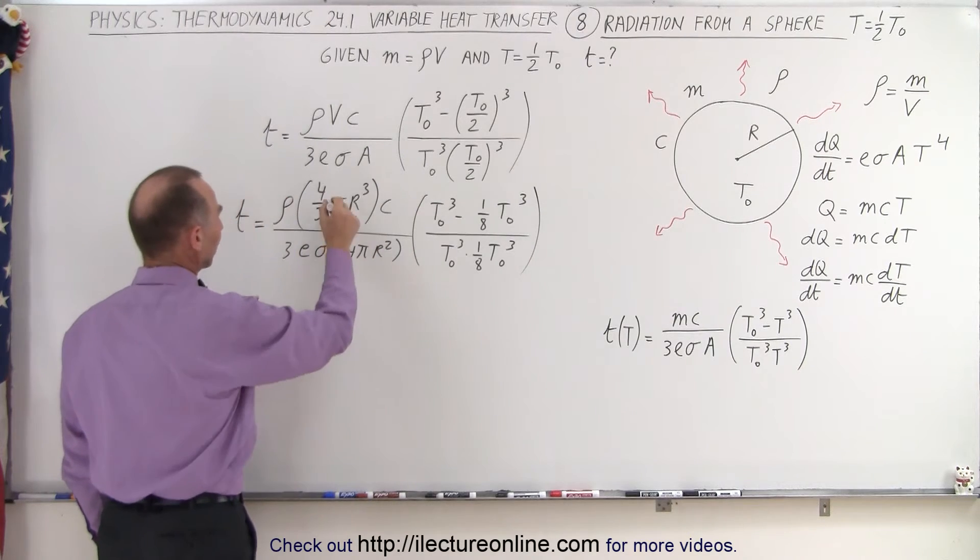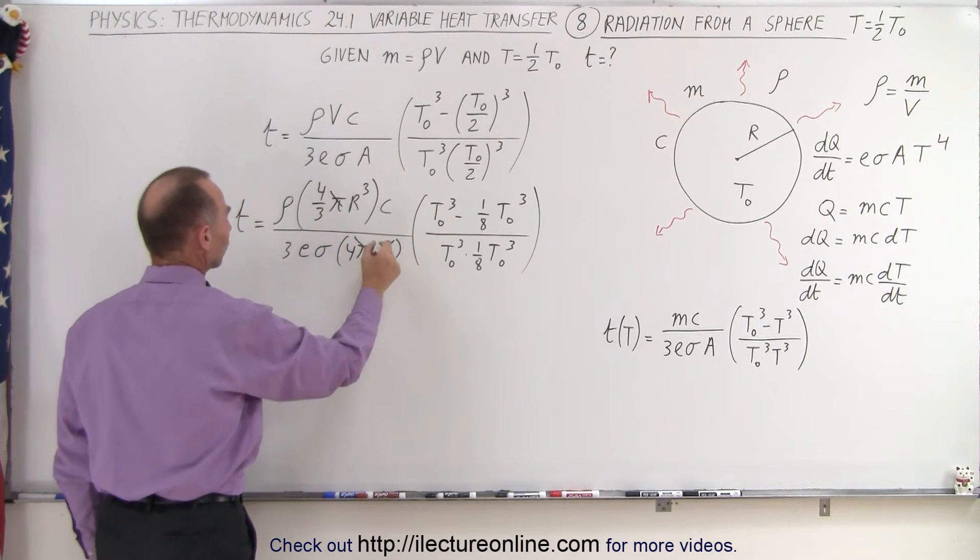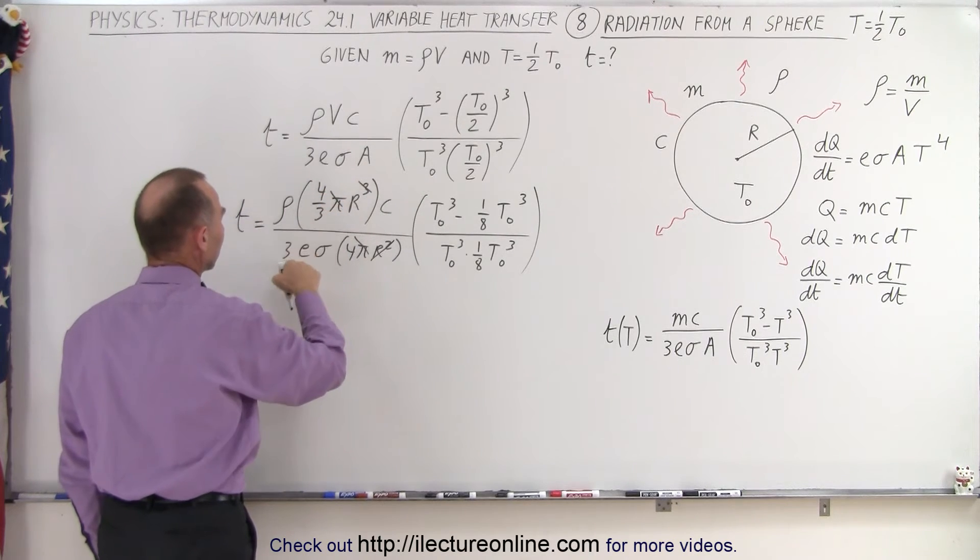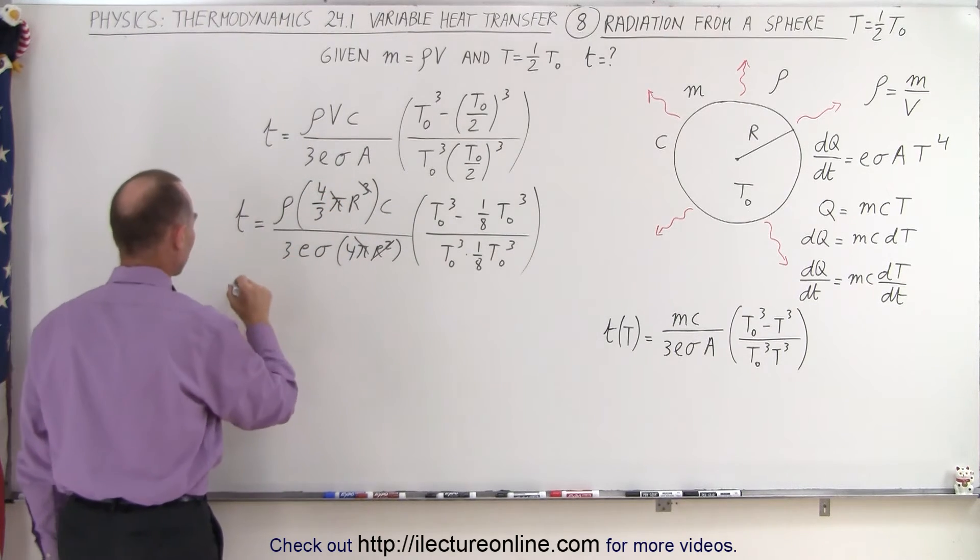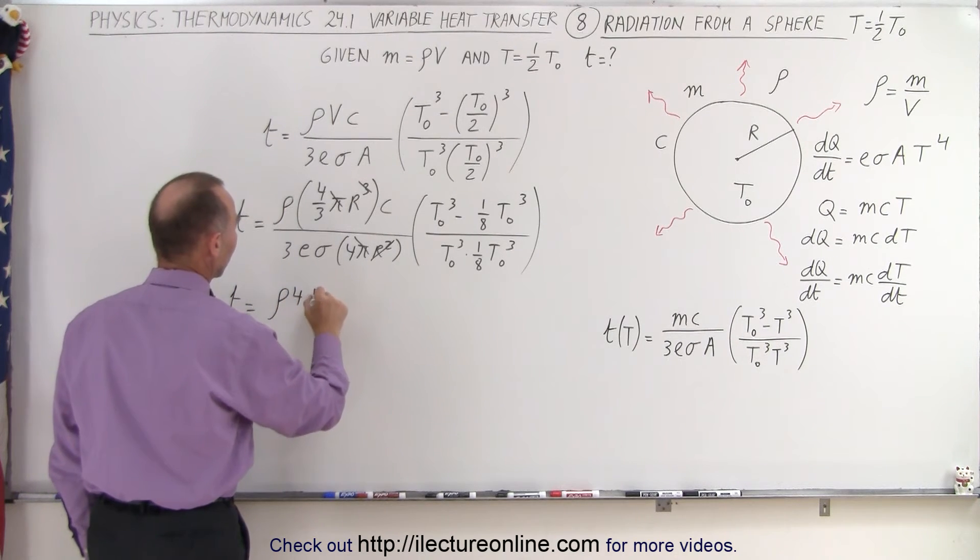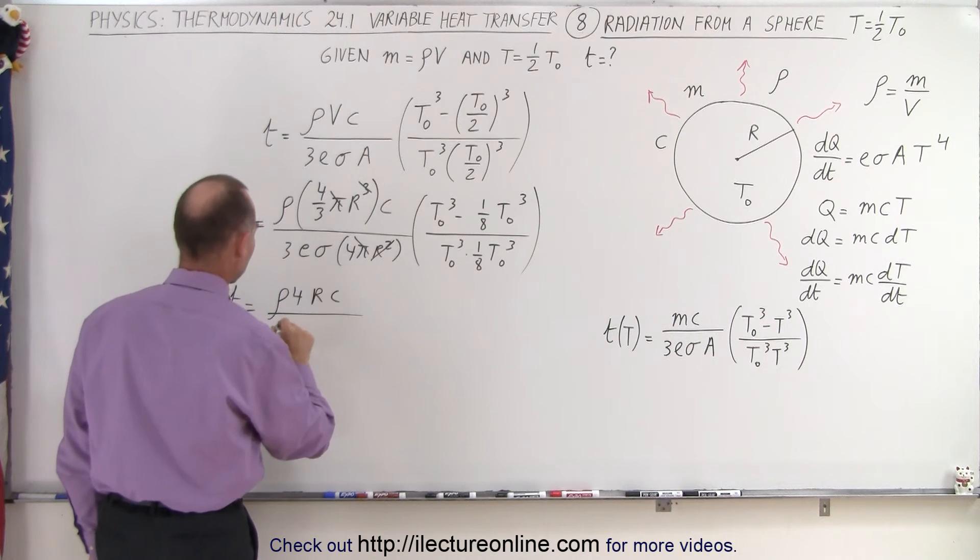All right, so here notice that the π's cancel out, the r squared cancels out two of those. We have 4 and here 3 times 3, which is 9. So this becomes T is equal to the density times 4 times r times C, divided by 9Eσ.